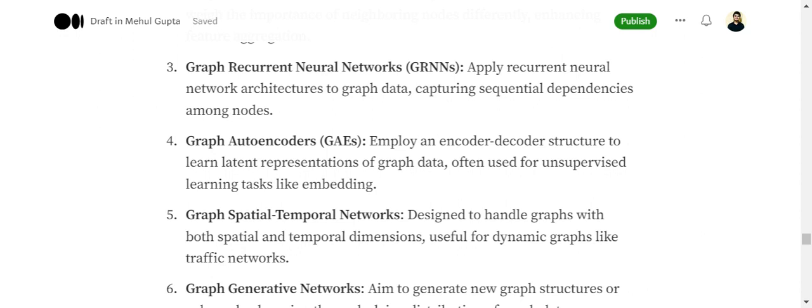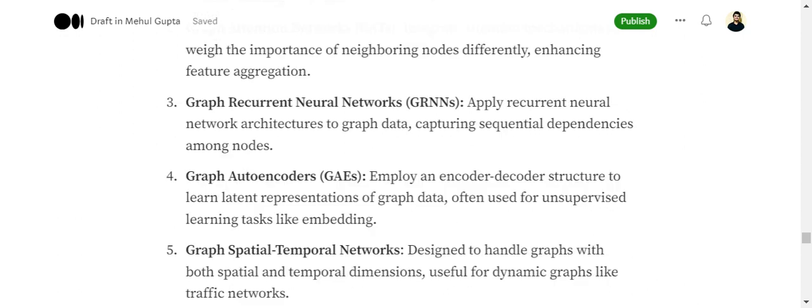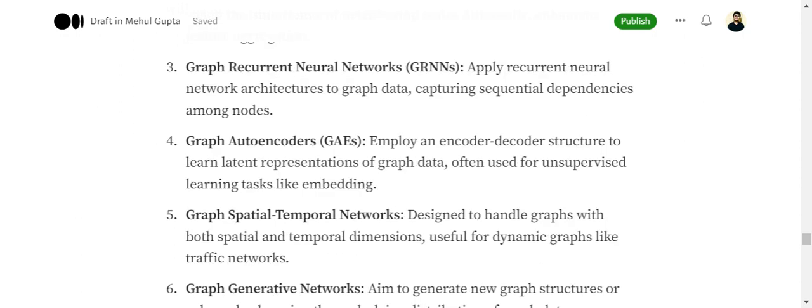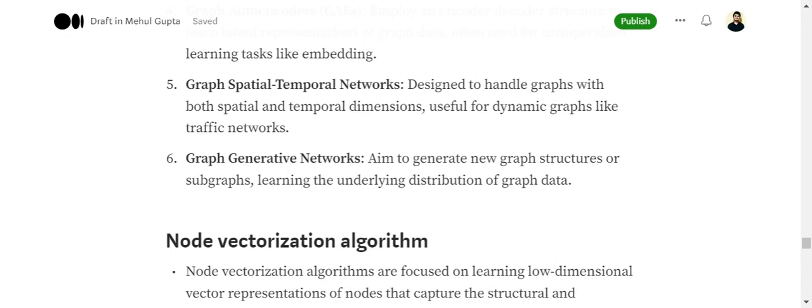Graph Autoencoders employ an encoder-decoder structure. I'm assuming you have baseline knowledge of what encoders are, what RNNs are, what attention is, what convolution is, before understanding graph neural networks. Graph autoencoders employ an encoder-decoder structure to get a latent representation of the graph itself, used for unsupervised problems. Graph Spatial-Temporal Networks help handle spatial and temporal dimensions. Graph Generative Networks generate new graph structures, subgraphs, etc. There are many other classes, but these are the major ones I'll explain in future videos.